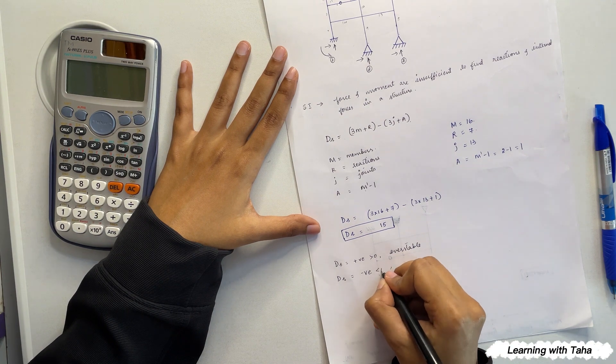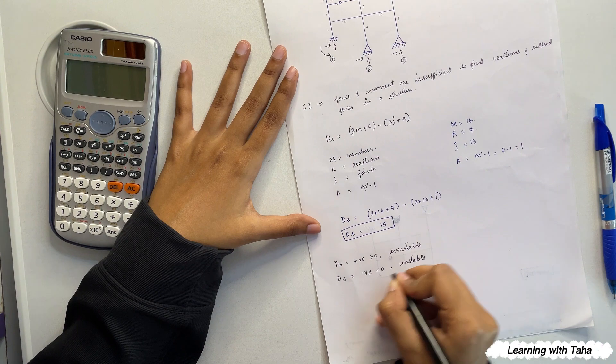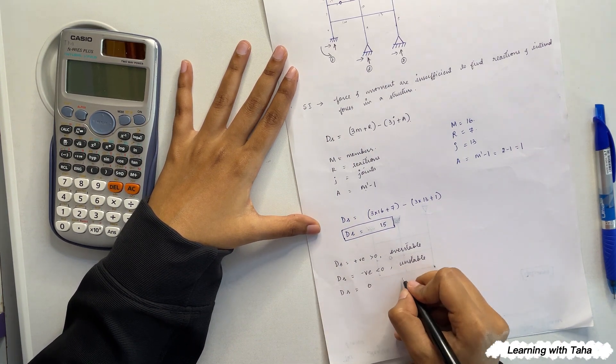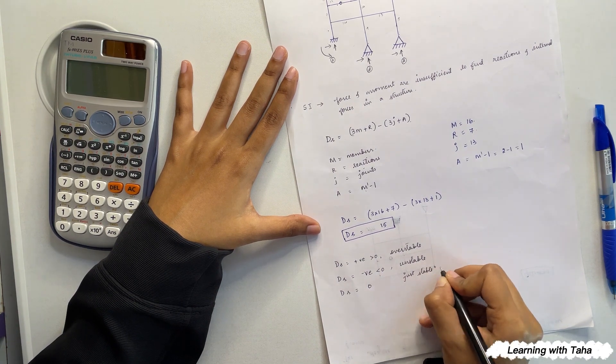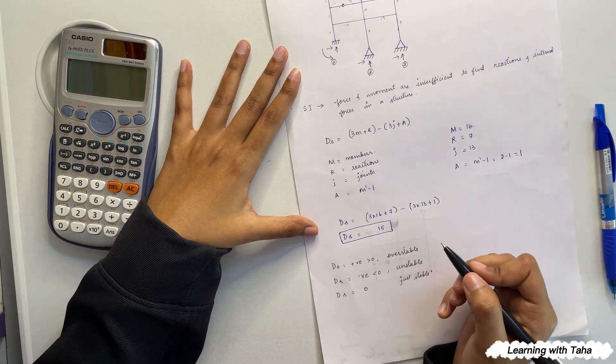If degree of static indeterminacy is negative, which means less than zero, then the structure is unstable. Also, when the degree of static indeterminacy is zero, the structure is just stable. So from this we know that the above structure is overstable.